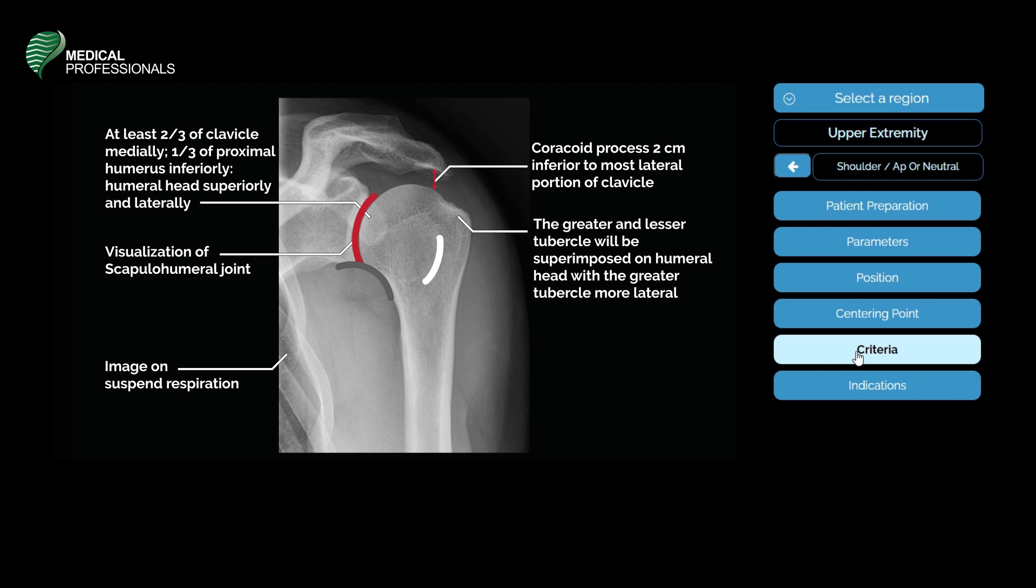The coracoid process is 2 centimeters inferior to the most lateral portions of the clavicle. This position is best done on suspended respiration.